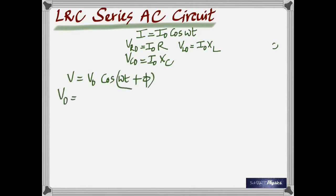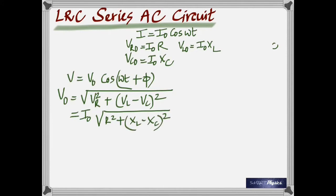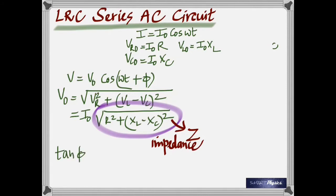Generally the voltage is V_not cos(omega t + phi), so the resultant voltage should be square root of V_R squared plus (V_L minus V_C) squared, which I've explained using the vector diagram. This gives us I_not times square root of R squared plus (X_L minus X_C) squared. The whole term is called the impedance of the AC circuit.